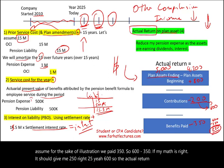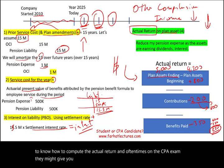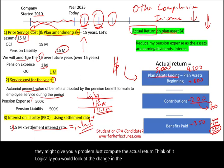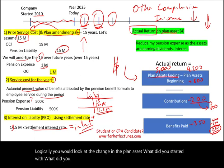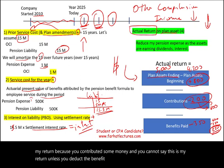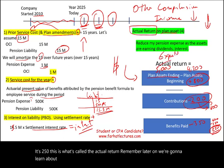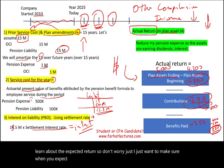You need to know how to compute the actual return — on the CPA exam they might ask you to just compute it. Think of it logically: look at the change in plan assets, then deduct contributions because that's money you sent in, and deduct benefits paid because that's paid out. What's left — $250 — is the actual return. Later we'll learn about the expected return, so keep in mind we have both expected and actual.